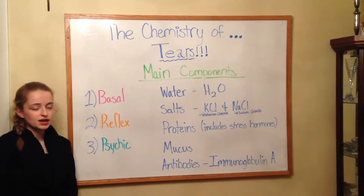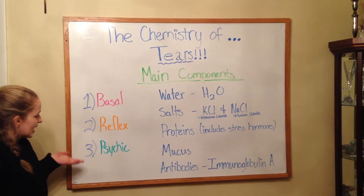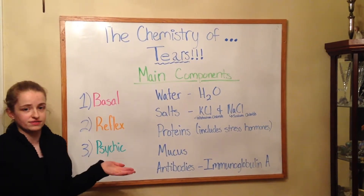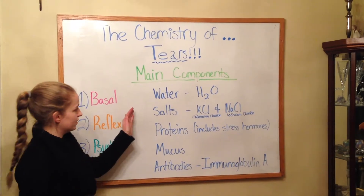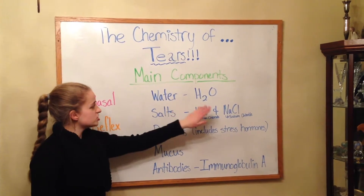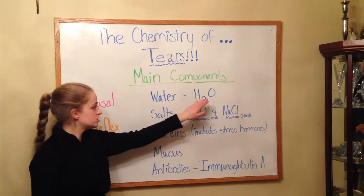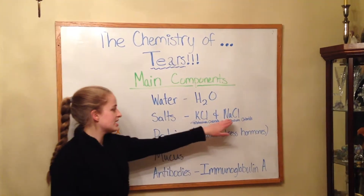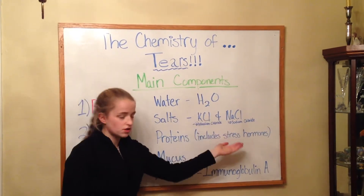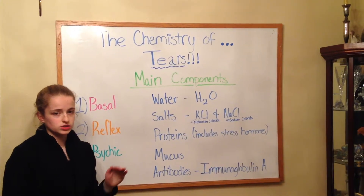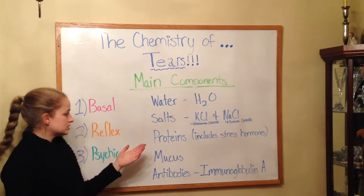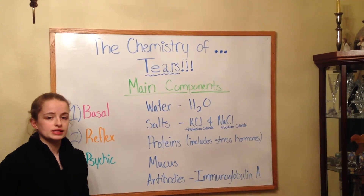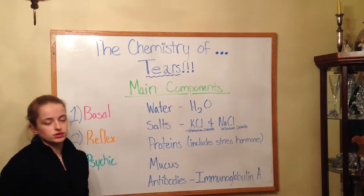Now let's talk about some of the main components of tears. While these three kinds of tears share the same major components, they do vary slightly based on the kind of tear. First of all, we have water, which is H2O — two hydrogen atoms bonded to an oxygen atom in a polar covalent bond. We have salts, KCl and NaCl, or potassium chloride and sodium chloride. In this case, we don't mean the salts you put on your food — these salts refer to two ionically bonded elements that form a compound, or a salt.